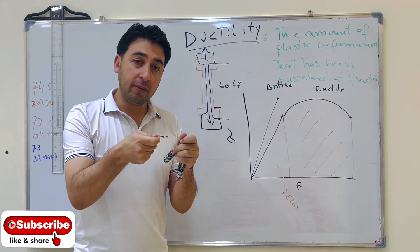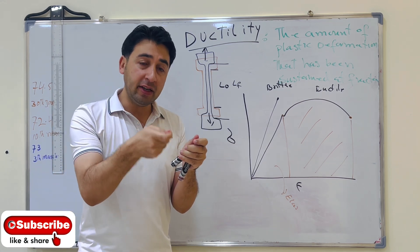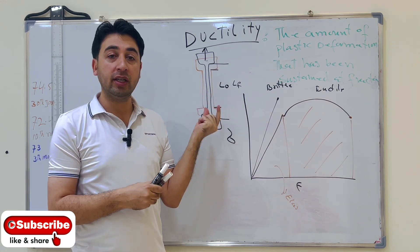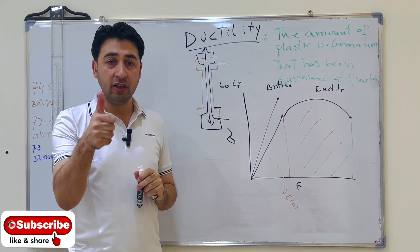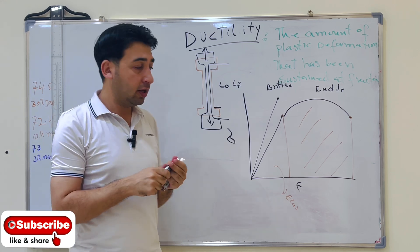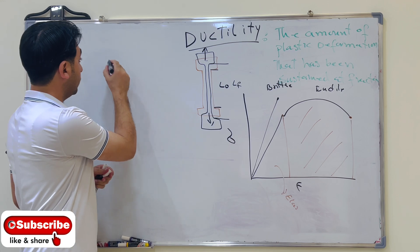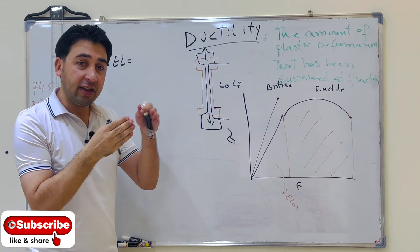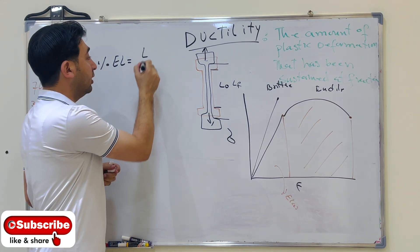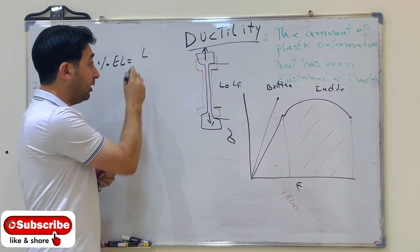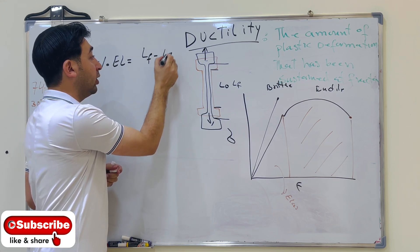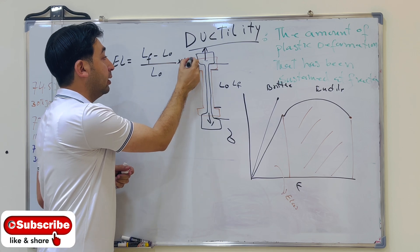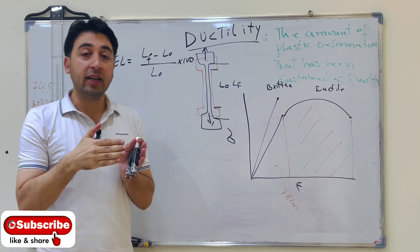How much plastic deformation is there — what is the permanent deformation in this specimen? We can measure that as percent elongation. Percent elongation is calculated as the final length minus the original length, divided by the original length, multiplied by 100. This gives us the percent elongation in the specimen.